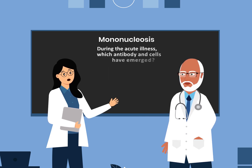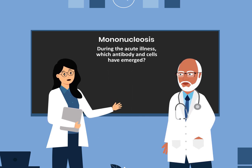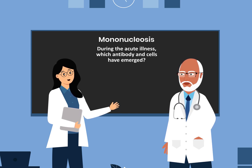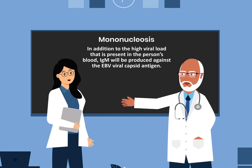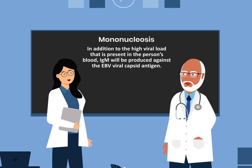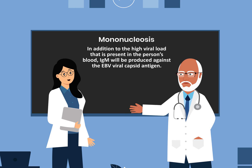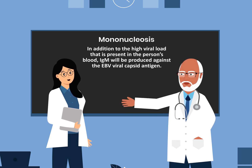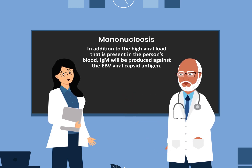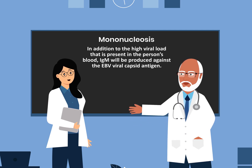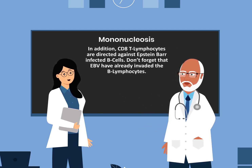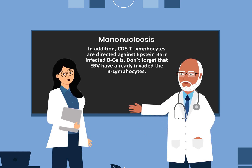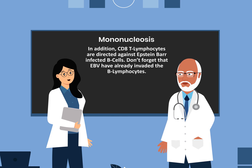During the acute illness, in addition to the high viral load present in the person's blood, IgM will be produced against the Epstein-Barr virus capsid antigen. In addition, CD8-T lymphocytes are directed against the Epstein-Barr infected B cells.